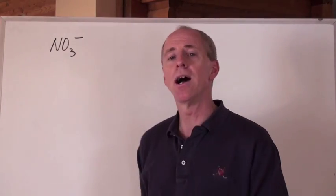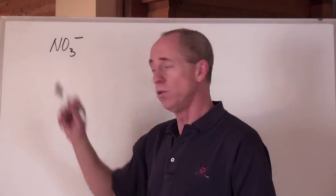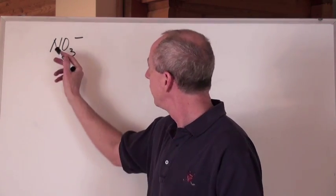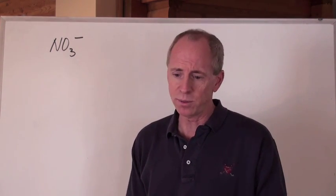So here's a polyatomic ion, nitrate ion, NO3 negative. That's a very popular one, isn't it? Well, you can do a Lewis diagram for that too, because it is kind of a molecule. It's just that it's got a charge on it. So how do you account for that charge? Quite simply, it's this.